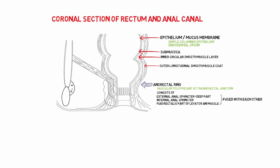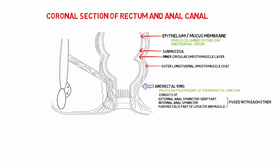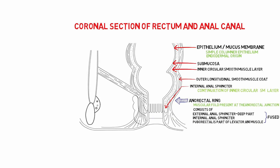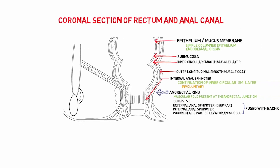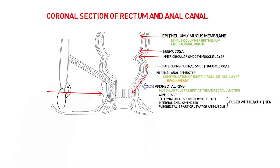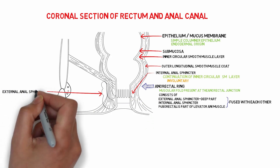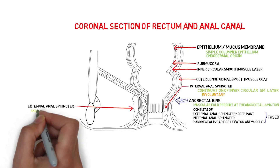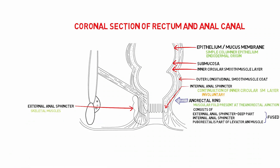There are two anal sphincters: internal and external. The internal anal sphincter is the continuation of the inner smooth muscle layer. Though it is made up of smooth muscles, it is involuntary in action. Surrounding the internal anal sphincter is the external anal sphincter, which is made up of skeletal muscles, so it is a voluntary sphincter.